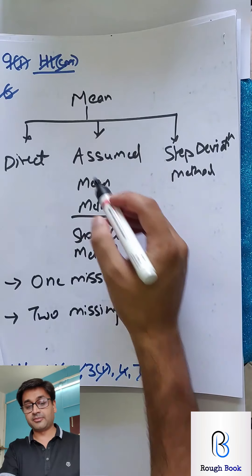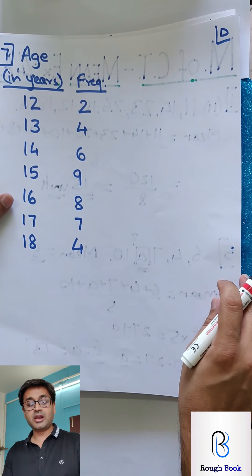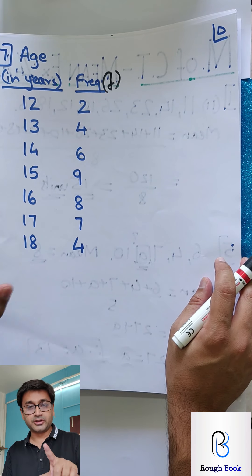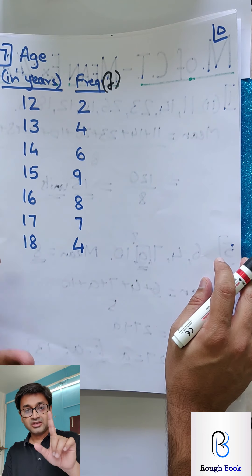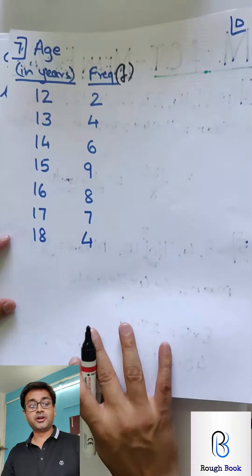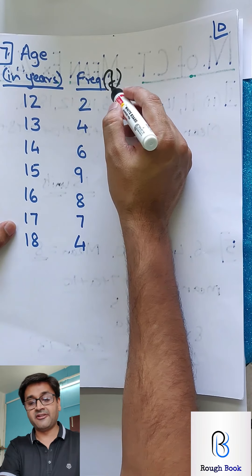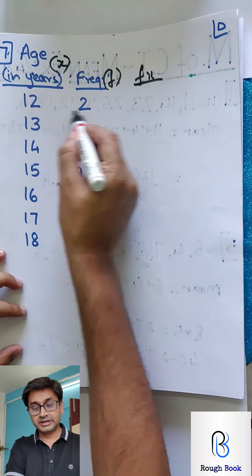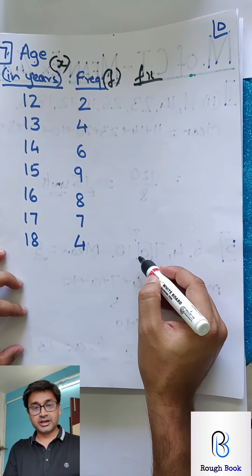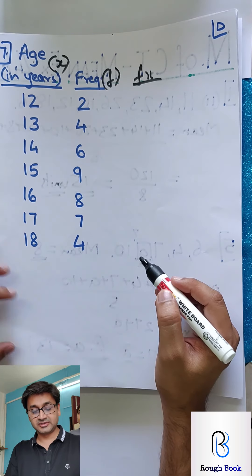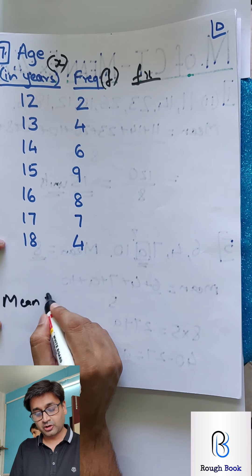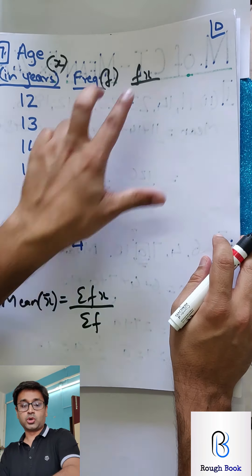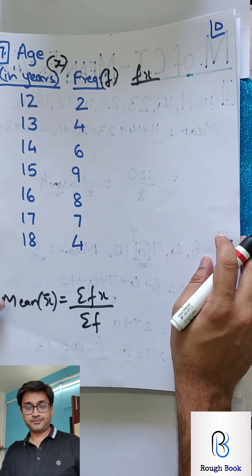Now we are doing the first type: the direct method to calculate mean using the ungrouped distribution table — there is no group here. We call this column F and this column X. How are you going to calculate? Very simple: multiply F with X in each row, add the entire FX column, and whatever answer you get, divide by the total of frequencies. So basically the formula for mean, which we call X-bar, is going to be summation FX divided by summation F.